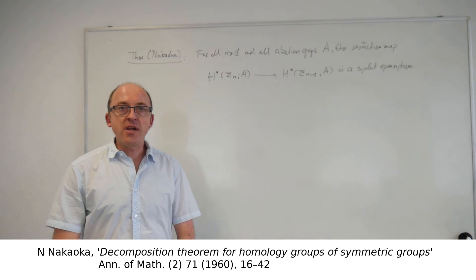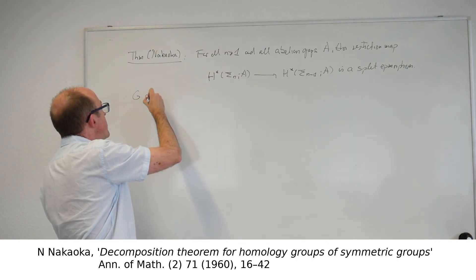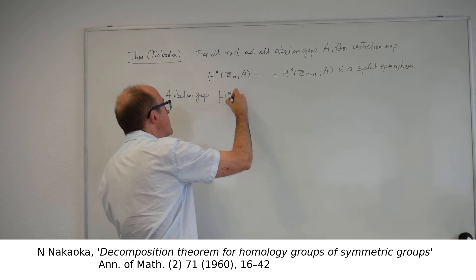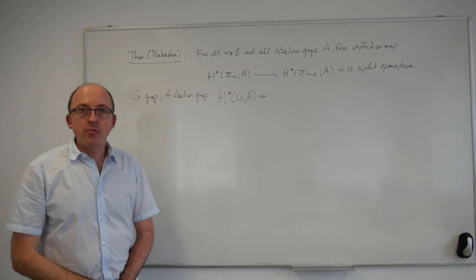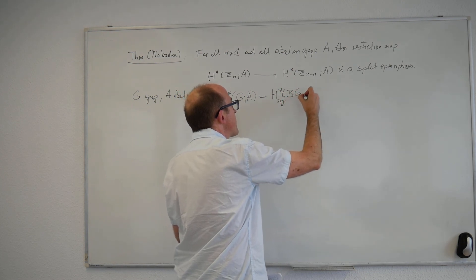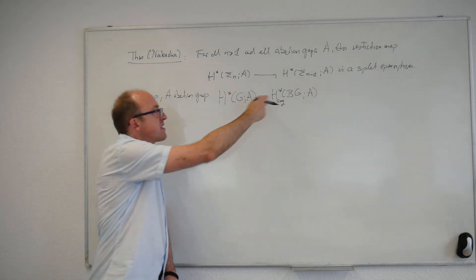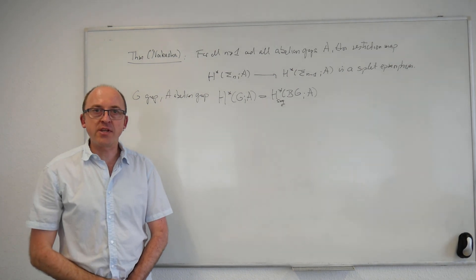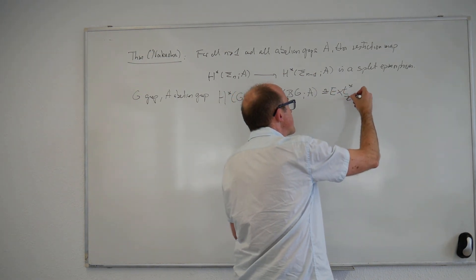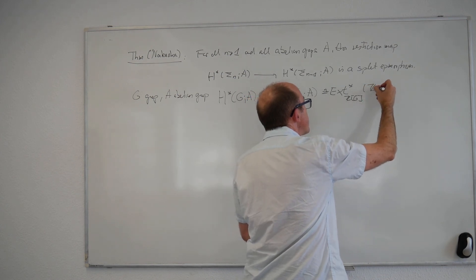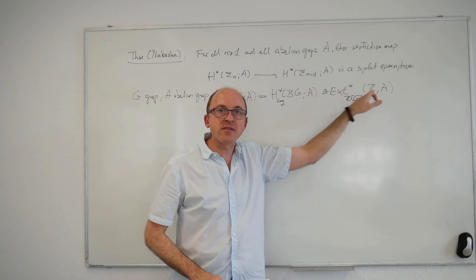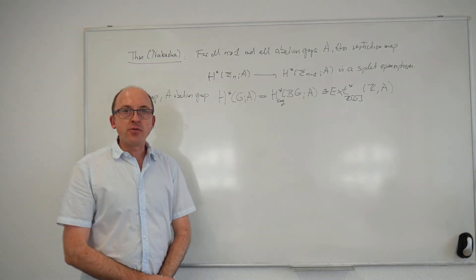To fix notation and terminology, let me quickly say what I mean by group cohomology. If G is a discrete group and A is an abelian group, then by group cohomology there are two equivalent things you could mean. If you are more topologically inclined, you could take this to be the singular cohomology of a classifying space of G with coefficients in A — this definition even makes sense for topological groups, in particular for compact Lie groups. If you are more algebraically inclined, this is the Ext groups over the group ring of G between the trivial module Z and the module A, where the group acts trivially on both. So you can choose which definition you want to work with.